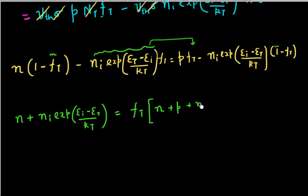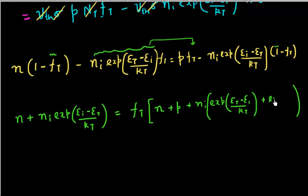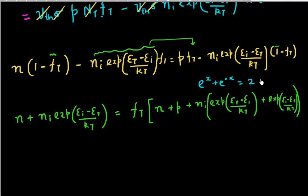I get plus Ni times exp((Et minus Ei)/kT) and plus Ni times exp((Ei minus Et)/kT). I recognize this as a term with e^X plus e^(-X), and from knowledge of the hyperbolic cosine function, I write that as 2 times Ni times hyperbolic cosine of (Et minus Ei)/kT.